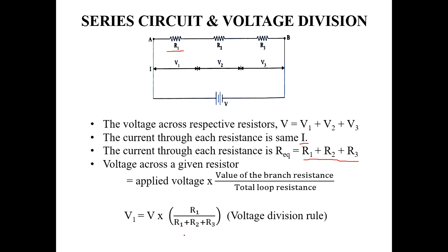The voltage division rule: applied voltage times value of the branch resistance divided by total loop resistance. For voltage across R2, V2 equals V times R2 divided by (R1 plus R2 plus R3).